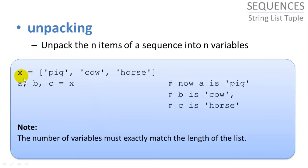Unpacking, if we want to assign all the items in a sequence to a set of variables, we can say a, b, c equals x. And then all of the strings in x will be assigned in order to the variables here on the left. So pig assigned to a, cow assigned to b, and horse assigned to c. But this only works if the number of variables exactly matches the length of your list. So here we have three items, we must have three variables.